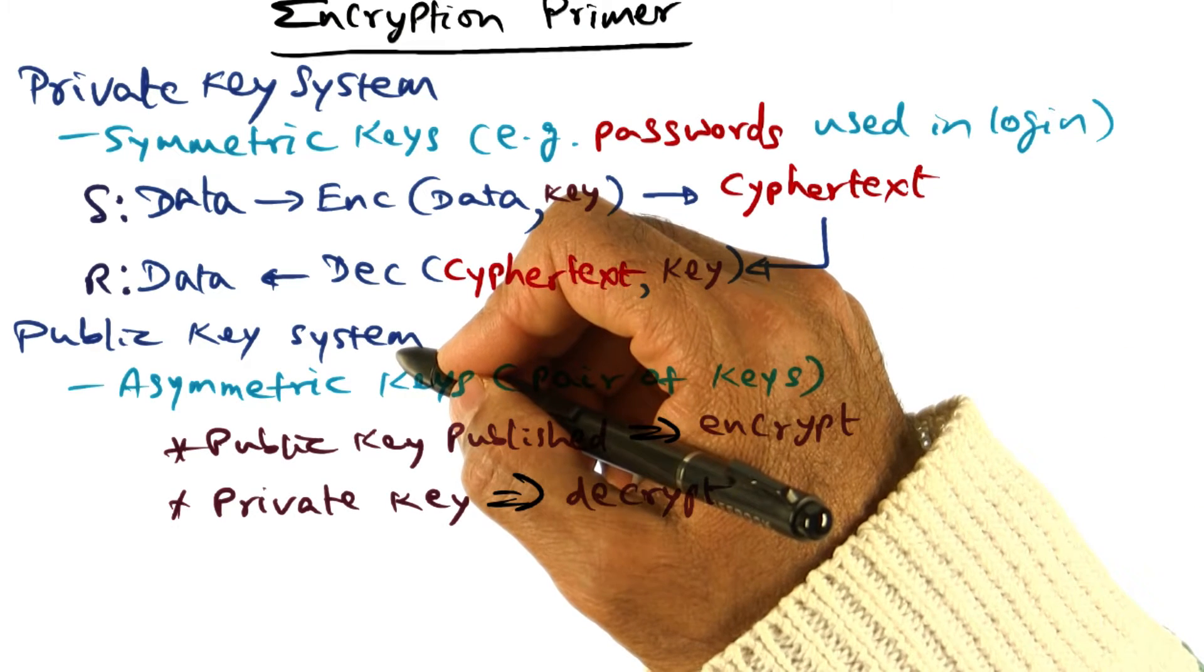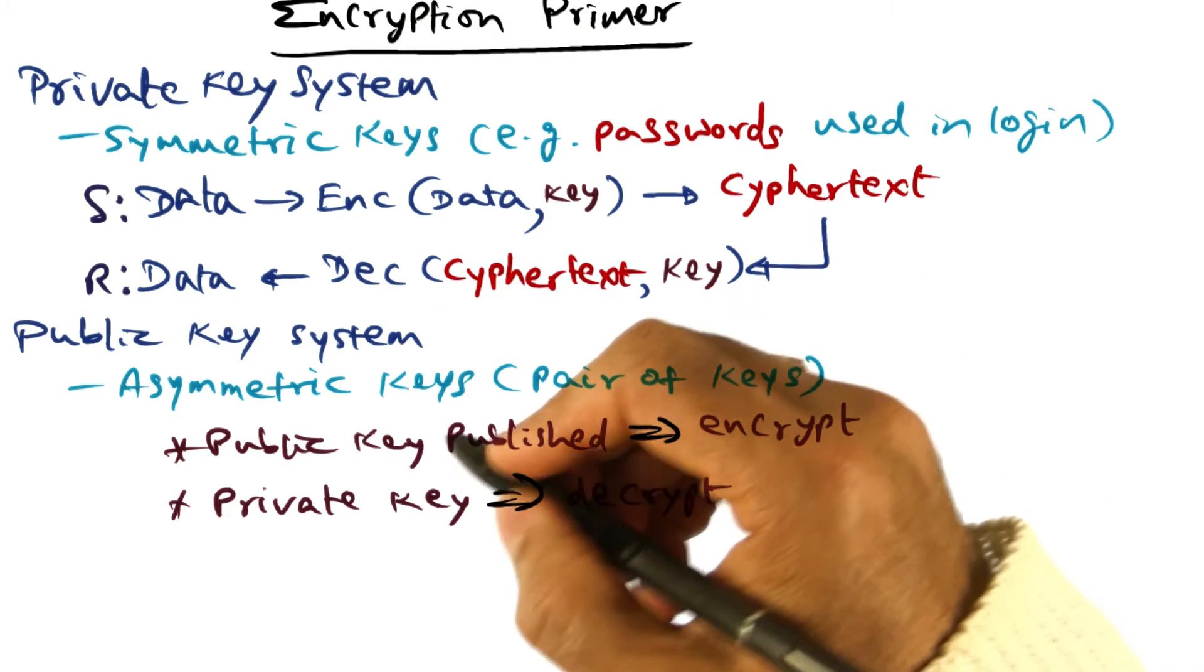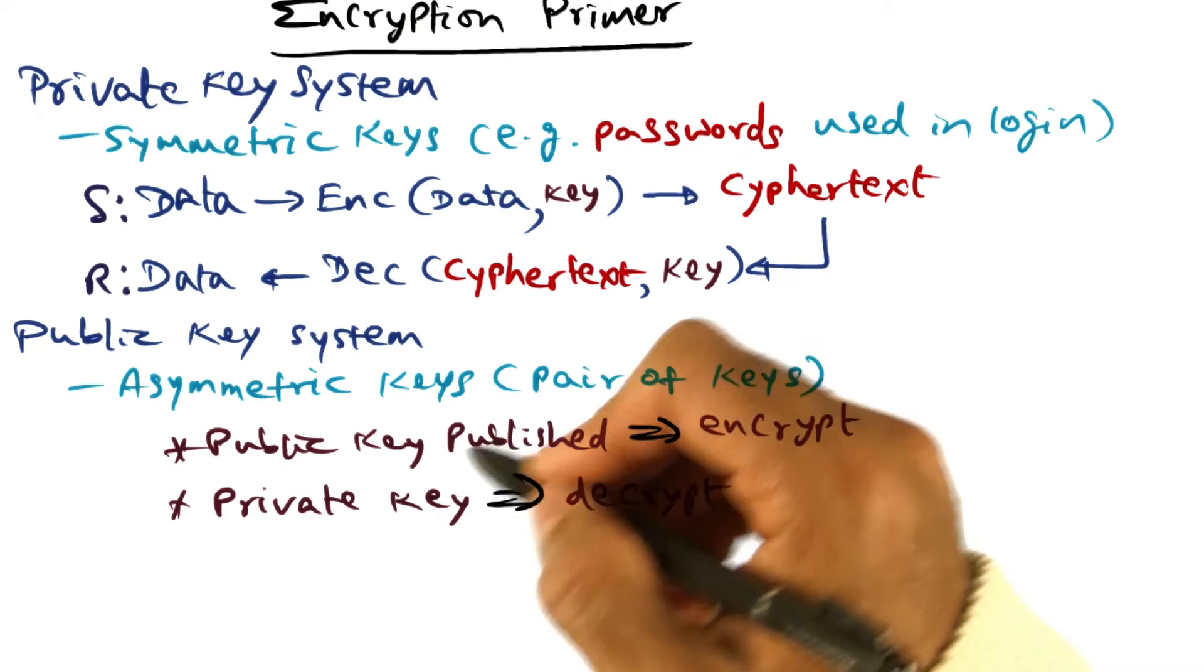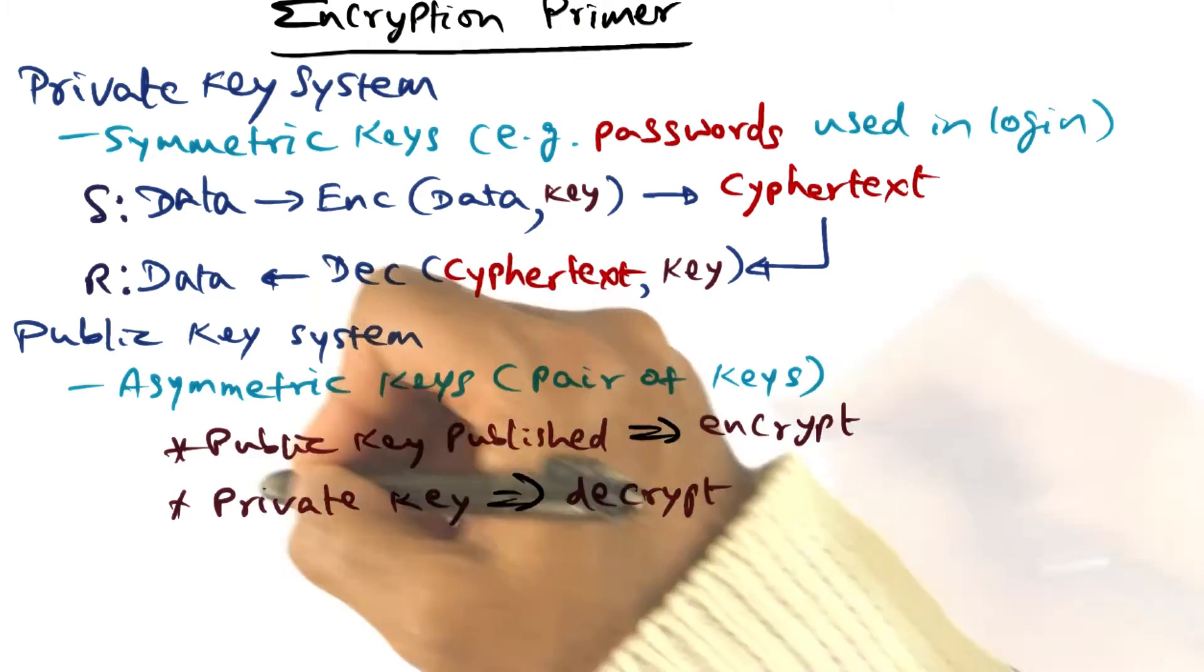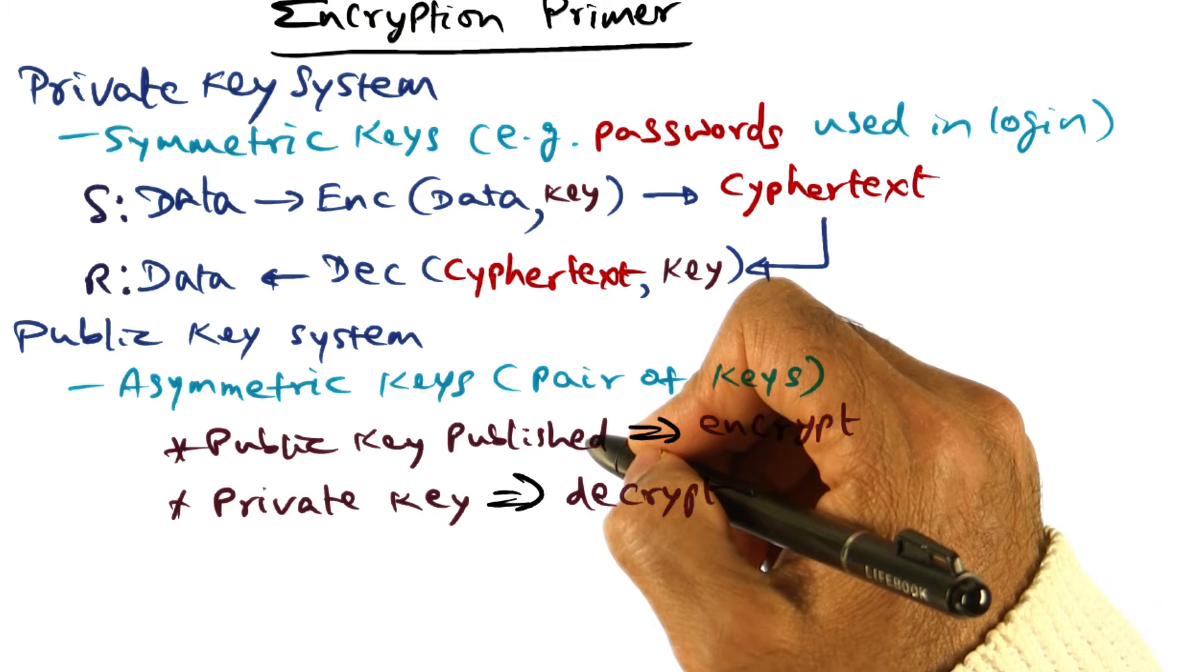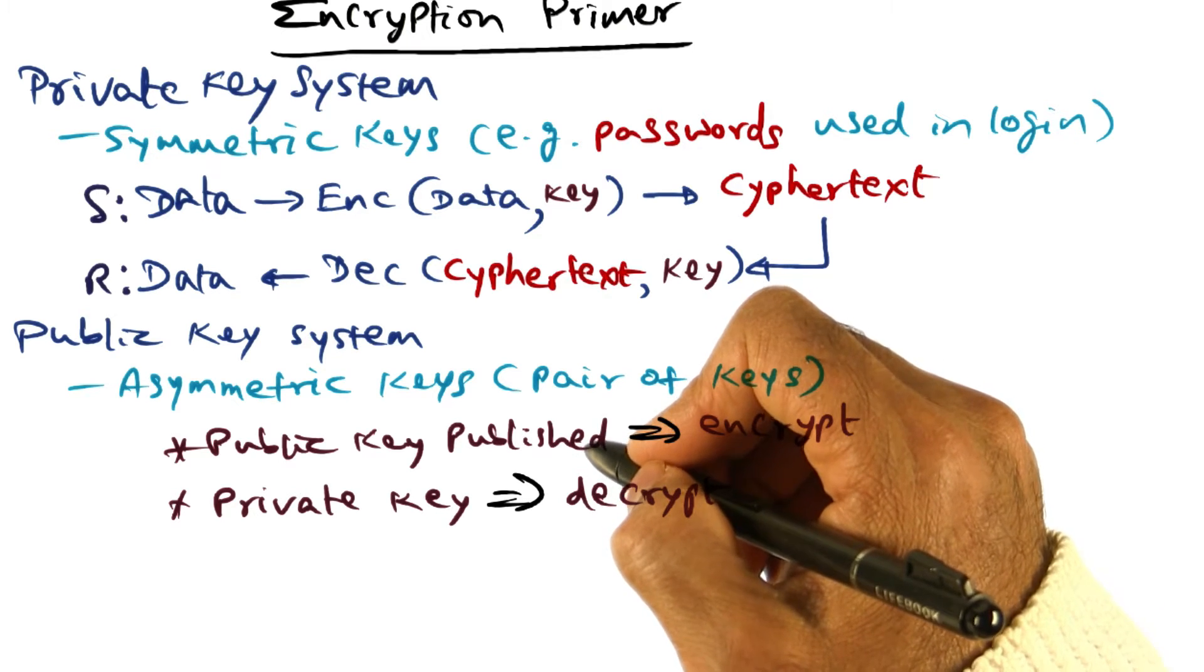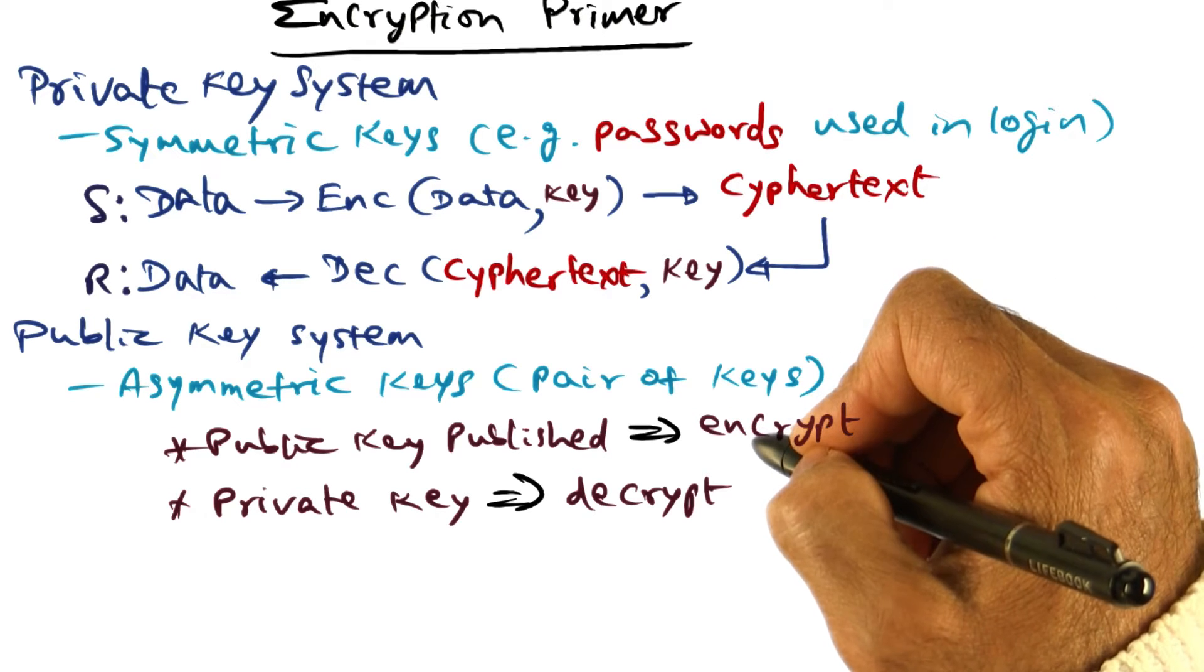The public key cryptosystem overcomes this key distribution problem. In this case, there is a public key that is published. The name itself suggests the idea behind the public key cryptosystem, and that is anyone can create encrypted data by taking this public key which is available, let's say, published in the yellow pages. They can take the public key, take the data that they want to send, encrypt it, and send it on the wire.